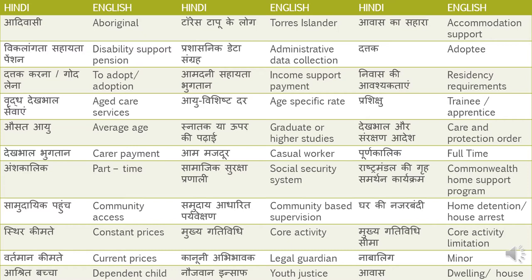Purnakalik — Full-time. Anshkalik — Part-time. Samajik suraksha pranali — Social Security System. Rashtramandal ki griha samarthan karyakram — that is Commonwealth Home Support Program. Commonwealth is translated as Rashtramandal, as covered in previous vocabulary videos, and griha samarthan karyakram is Home Support Program.